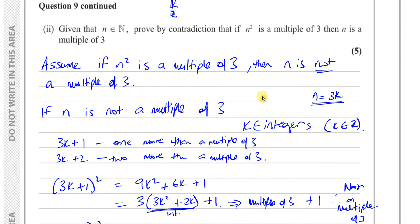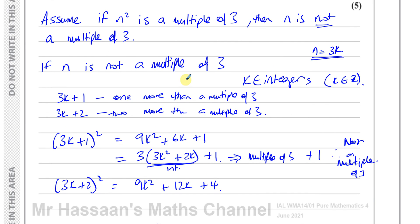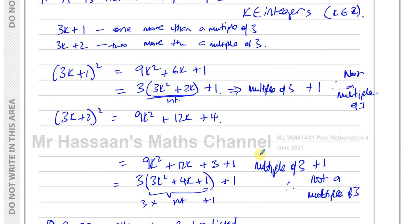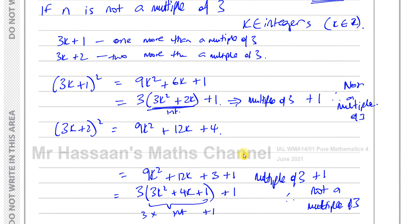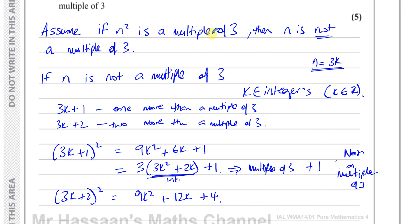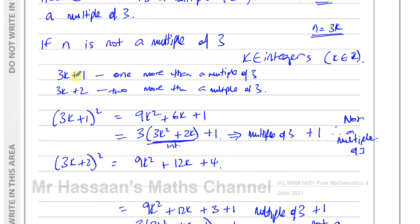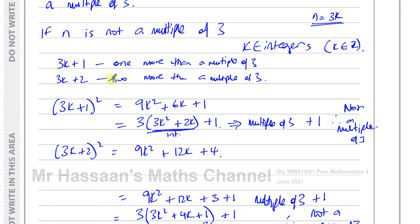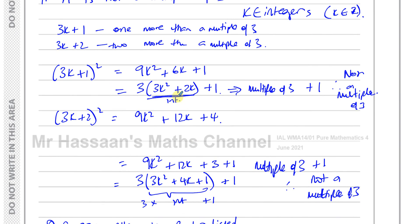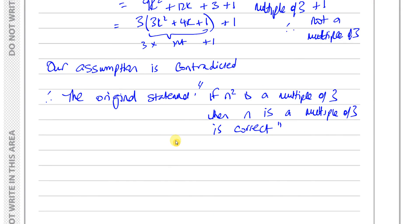To summarise proof by contradiction: you assume the opposite of the statement and show it leads to a contradiction. Here we assumed n is not a multiple of three, chose all possible non-multiples of three in algebraic form, squared them, and found expressions that cannot be multiples of three — they are all 3 × (integer) + 1, i.e. one more than a multiple of three.